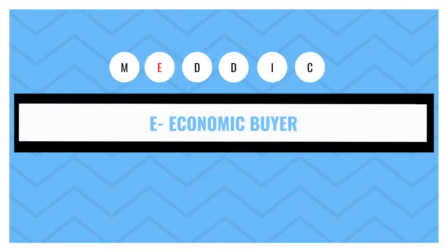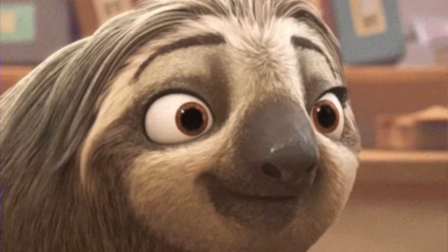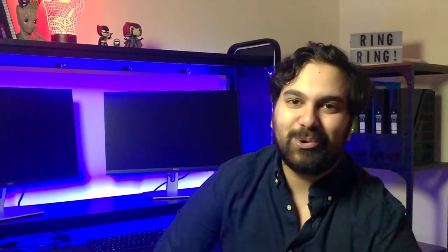E — the Economic Buyer. The economic buyer is the person in an organisation who actually makes the decisions about whether to move forward with your product. It can be great to have a prospect you speak to on a day-to-day basis who you get on with, but if they don't have the ability to sign off on projects, you're barking up the wrong tree. Make sure the prospects you're reaching out to either directly report to the decision makers or are the decision makers themselves — as early in the process as possible.